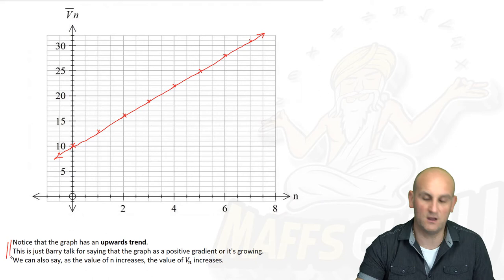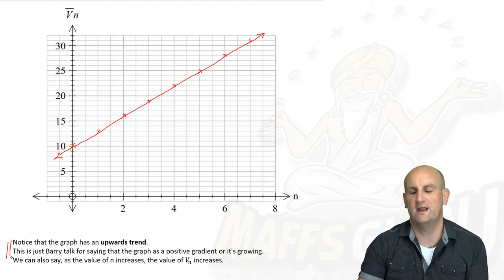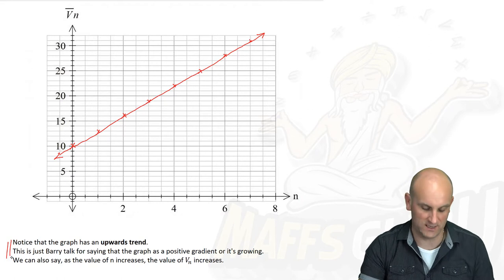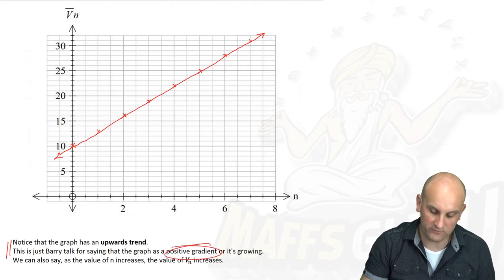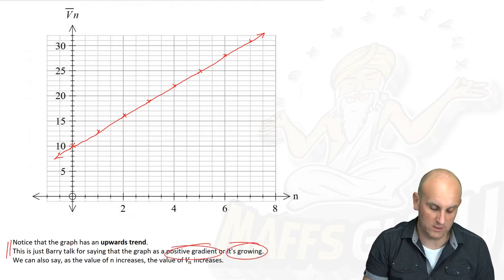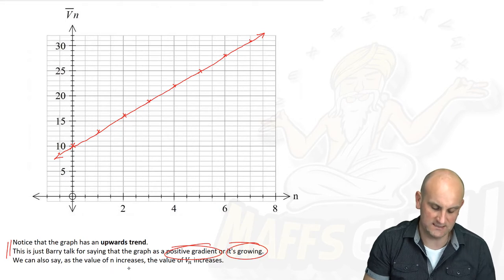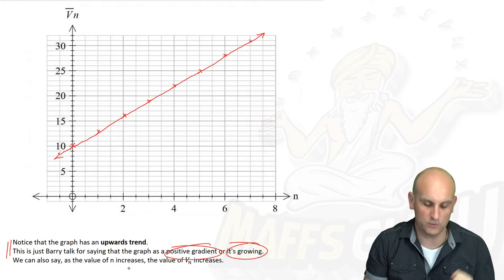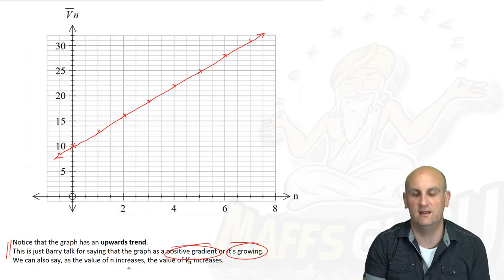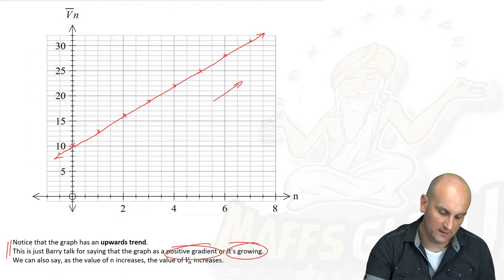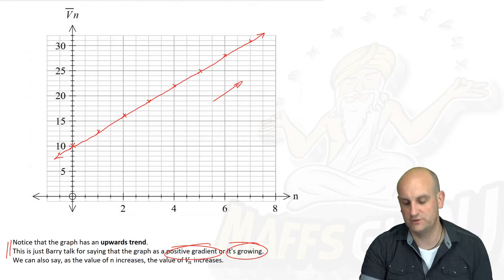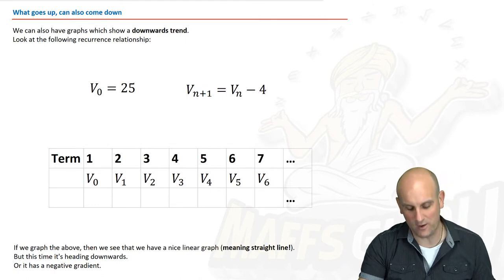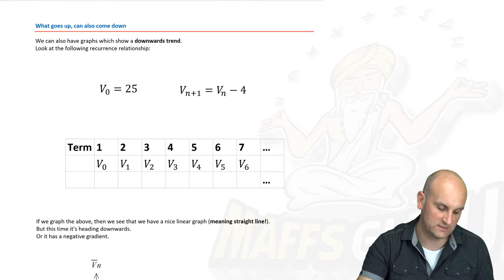What that means is I've got a straight line. So how would we describe that? Well, as I say here, notice the graph has an upwards trend. Now you're going to get into trends if you haven't already done so, but it's got an upwards trend. We could say it's got a positive gradient or it's growing. We could also write a sentence to say that as the value of n increases, the value of V of n increases. All of those are equally valid, but we can see here that there is a linear relationship between them.